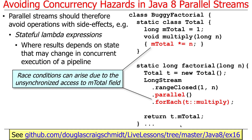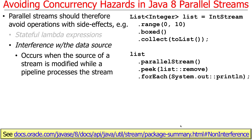That's a good example of race conditions. If you want to see how this works, just go ahead and try running this program, especially if you have a multi-core machine — which you probably do — and you'll see you get really bizarre results. So that's an example of a stateful lambda expression. It's a stateful lambda expression because it's being called in multiple threads, and t::multiply is a method reference that references this method, which is going to update shared mutable state, which is bad.